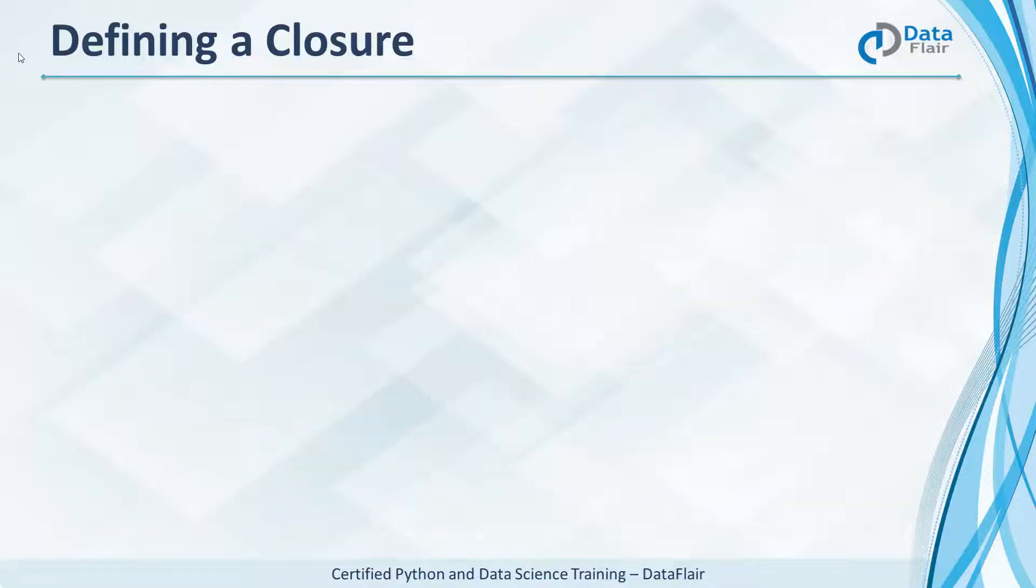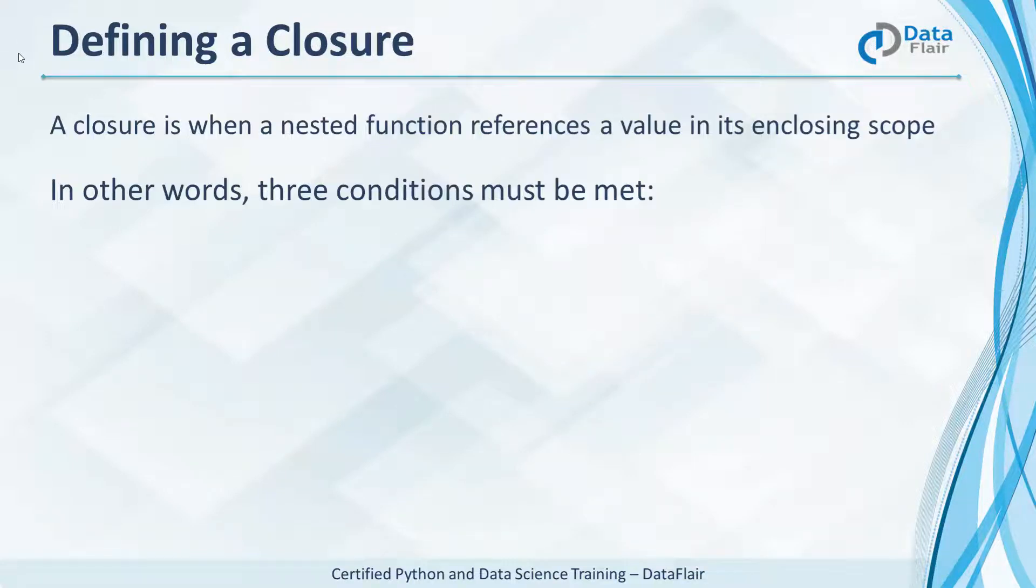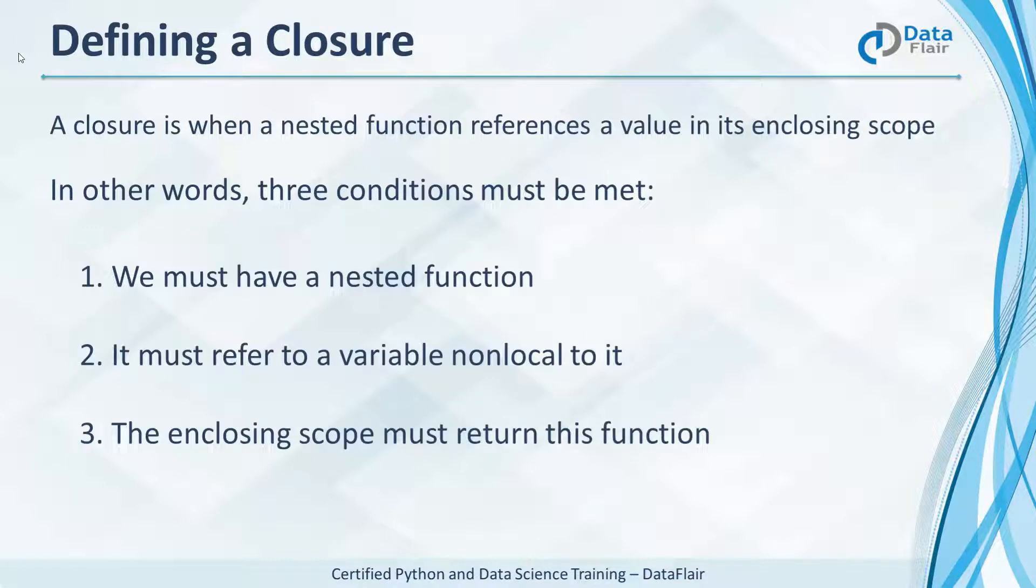So when do you have a closure? You have a closure when a nested function references a value in its enclosing scope. Three conditions must be met for a closure: there must be nested functions, since the inner function should refer to a variable that's non-local to it. Also the enclosing scope or the outer function must return the inner function.